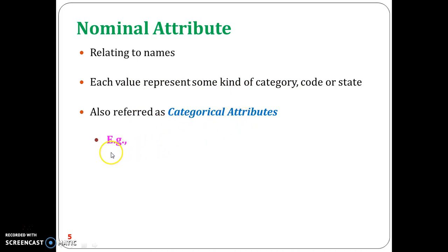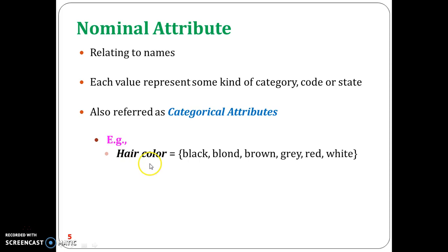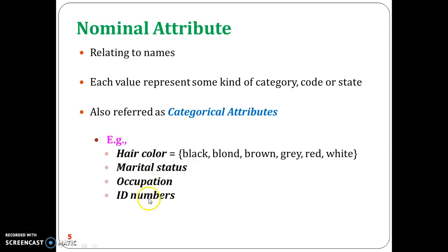Examples of nominal attributes include hair color, marital status, occupation, and ID numbers. For example, the hair color of a person can be black, blonde, brown, gray, red, white, and so on. The hair color can be any one of this given set of values.